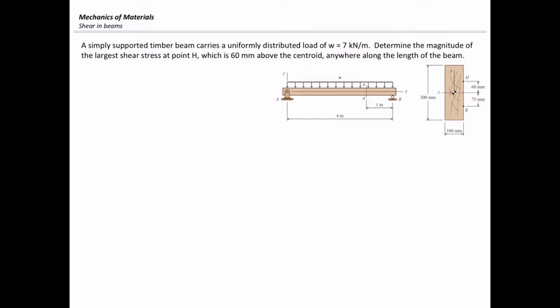In this problem, we want to determine the magnitude of the largest shear stress at point H anywhere along the length of the beam. Also, I would like to determine the value of shear stress at point H at section AA. The basic equation that I need to use here is shear stress equals VQ over IT. I need to determine all of these parameters one by one.